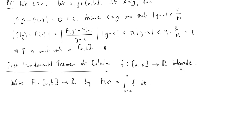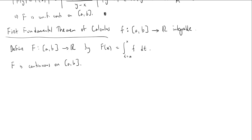The first statement is that big F is continuous. This is a neat way to build a new function using an integral — defining it as an integral gives you continuity, which is really cool. All we assumed was that f was integrable, and that lets us build a continuous, hence integrable, function big F. But if we even know that little f is continuous, we can say even more.